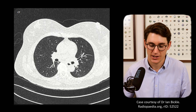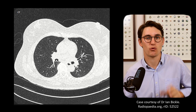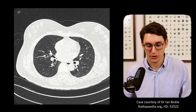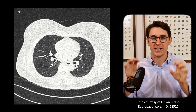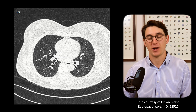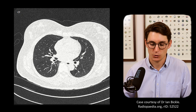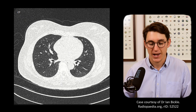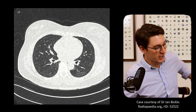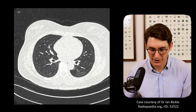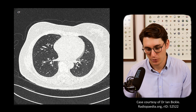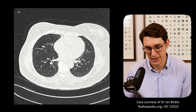Heading back up to the bronchus intermedius, the posterior branch is our right lower lobe bronchus. Almost immediately it gives off the superior segment posteriorly — this segment doesn't oppose the diaphragm and isn't part of the basilar group. Following further down, the lower lobe gives four divisions: medial, anterior, lateral, and lastly posterior. We can see the medial branch, anterior branch, lateral branch, and posterior branch all coming off in that order.